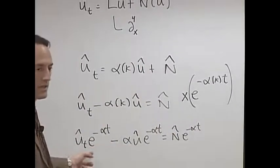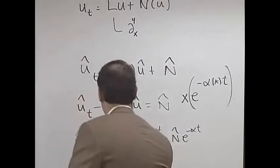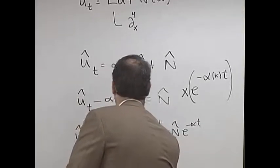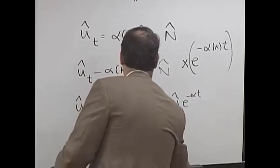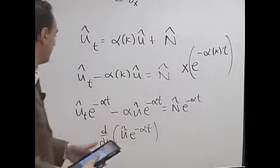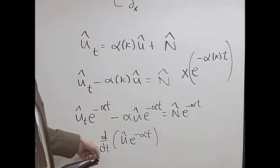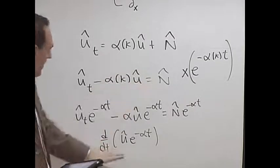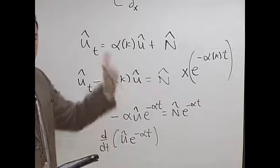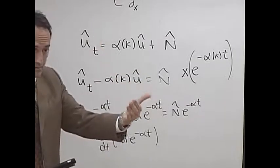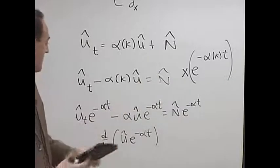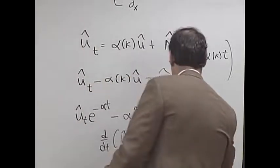Minus α û e^(-αt) equals N̂ e^(-αt). And if you look at this side over here, isn't this whole thing here just the derivative of û e^(-αt)? By picking that I've made the left hand side exactly the derivative of something.